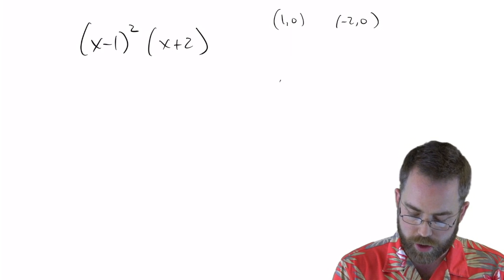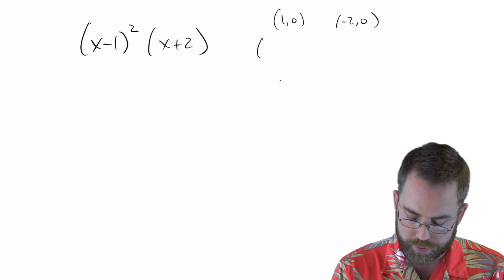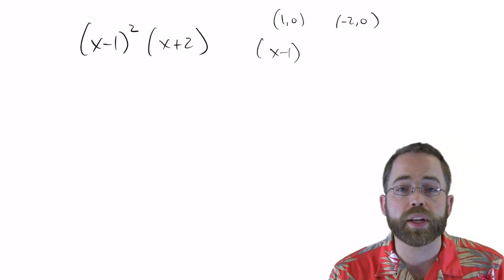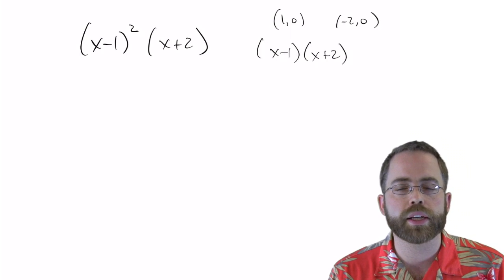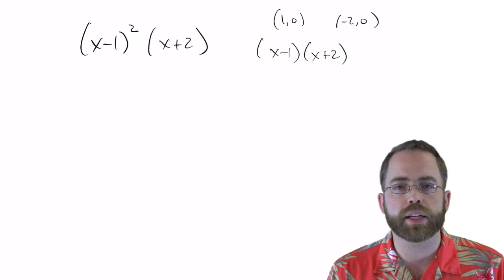So in order to guarantee us that we go through the point 1, 0, we have to include x minus 1. And if we want to go through the point negative 2, we have to include a term of x plus 2. Because when you plug in minus 2 into that, you get 0.